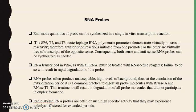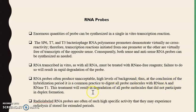RNA probes can be transcribed in vitro and must be treated with RNase reagent to prevent degradation of RNA molecules. The SP6, T7, and T3 bacteriophage RNA polymerase promoters are used for their transcription reaction and for synthesis of sense and antisense RNA probes. These can be easily synthesized using these bacteriophage RNA polymerase promoters; however, such RNA probes can produce high levels of background.